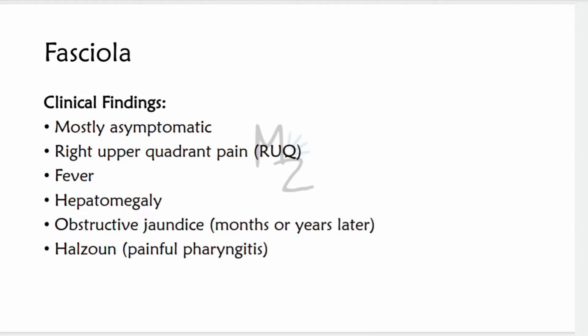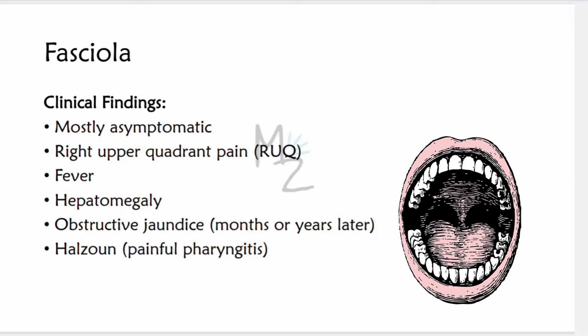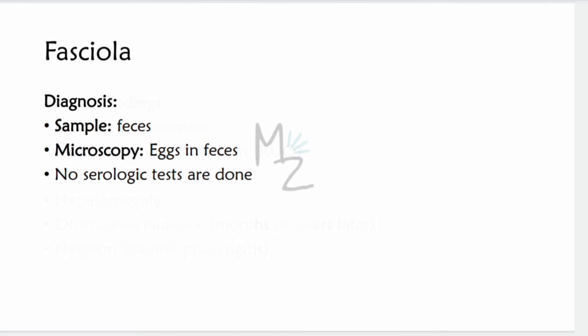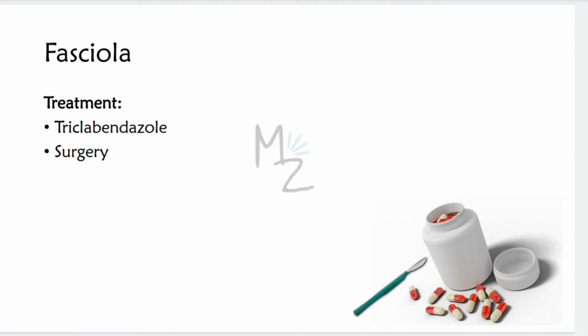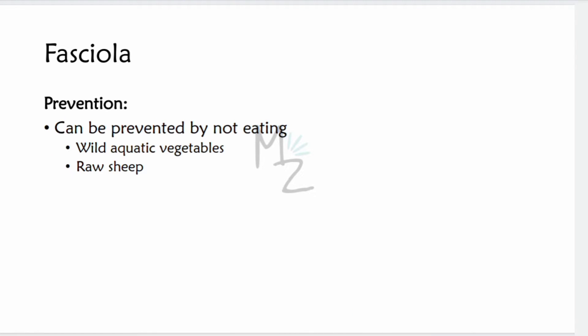Clinical findings: symptoms are due to the presence of adult worms in the biliary tract. The disease is mostly asymptomatic, but right upper quadrant pain can occur because the liver resides in the right hypochondria. Fever and hepatomegaly can also occur. Months or years later, obstructive jaundice can develop. Halzoun is a painful pharyngitis caused by the presence of adult flukes on the posterior pharyngeal wall. Diagnosis requires a feces sample; eggs are identified under microscope. There is no serologic test. The drug of choice is triclabendazole. Adult flukes in the pharynx or larynx can be removed surgically. Prevention: avoid eating wild aquatic vegetation or raw sheep liver.